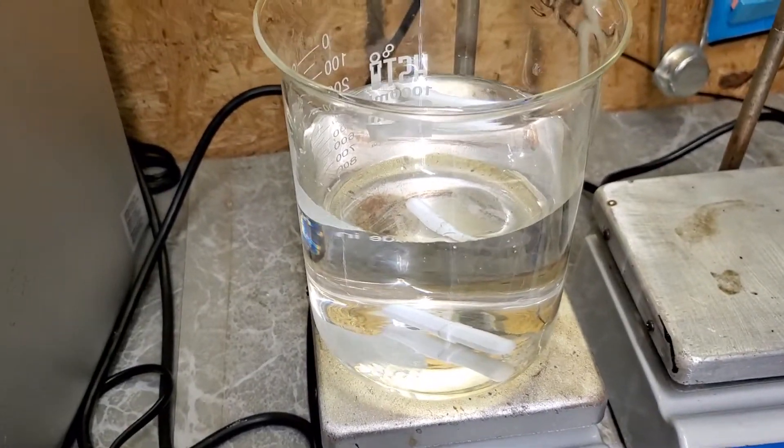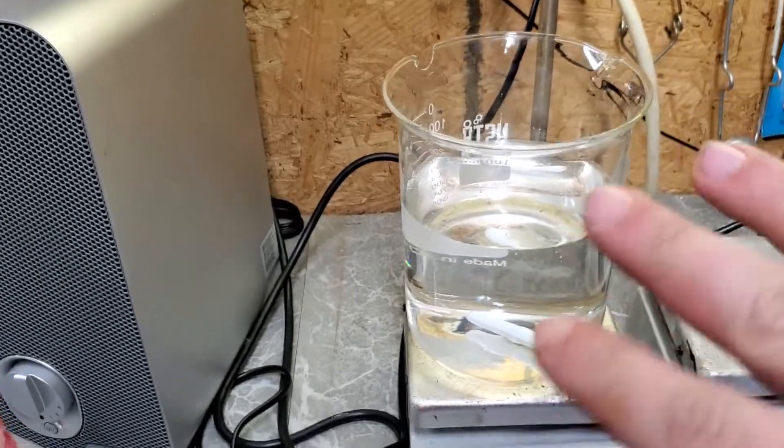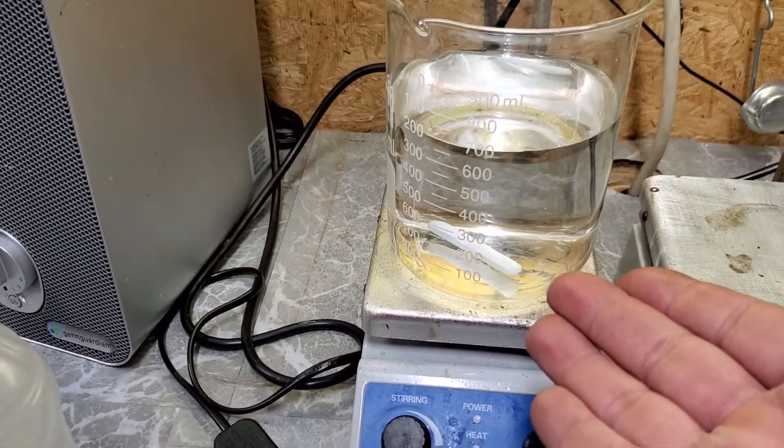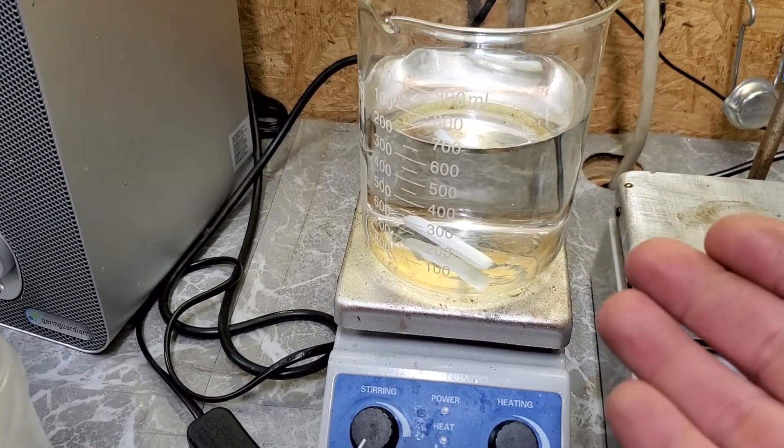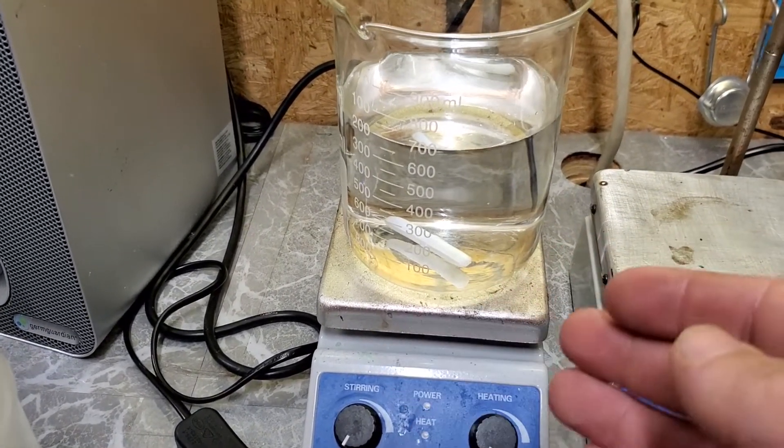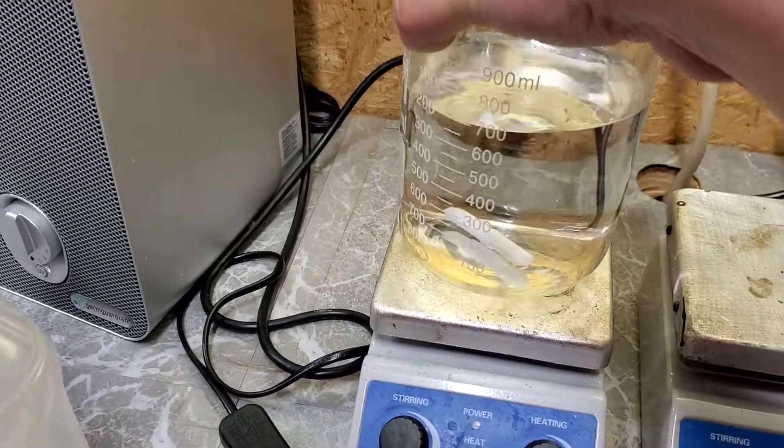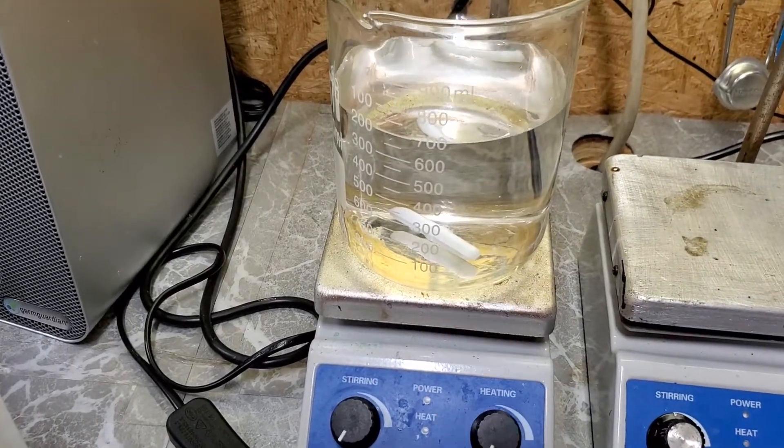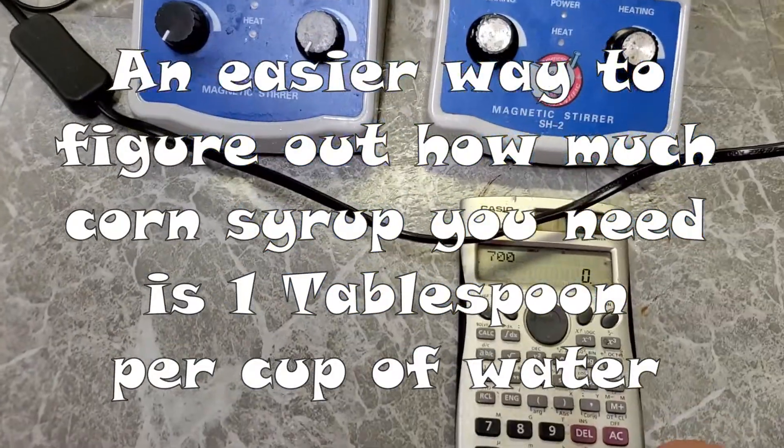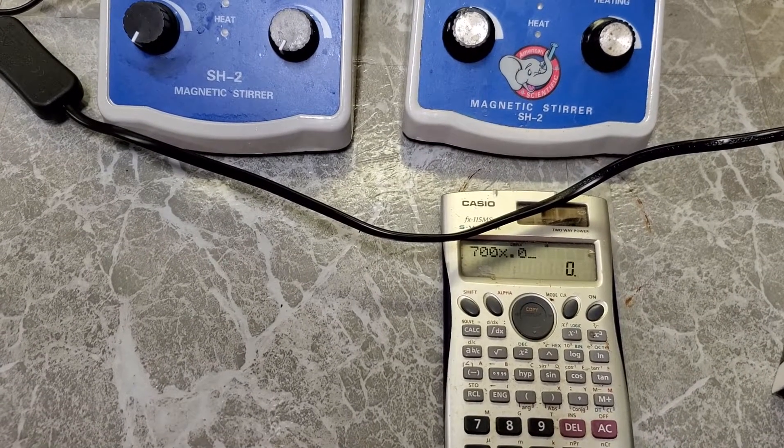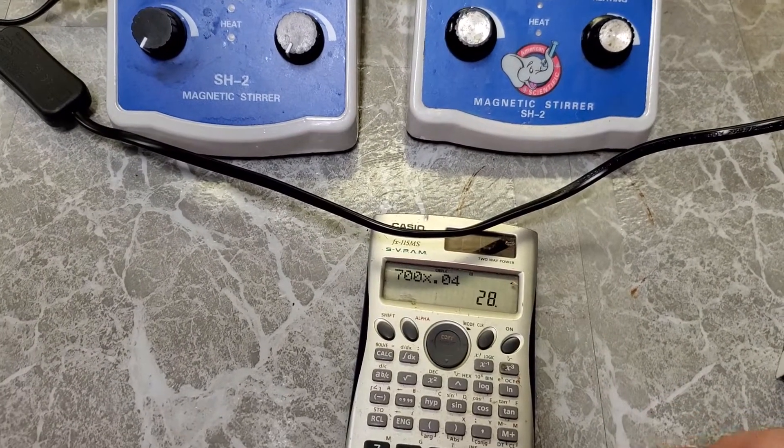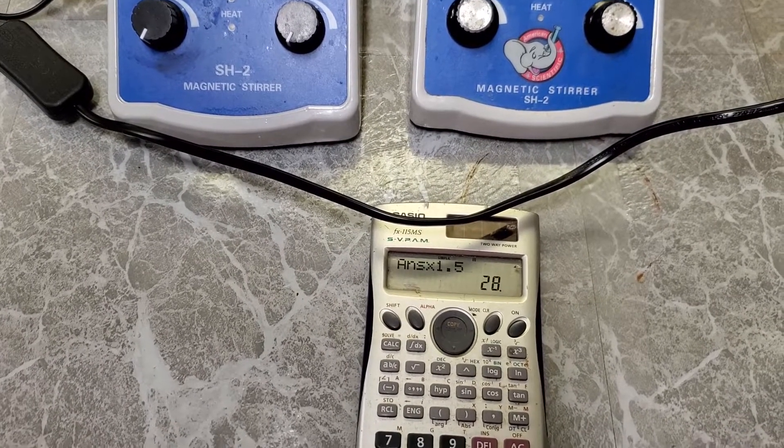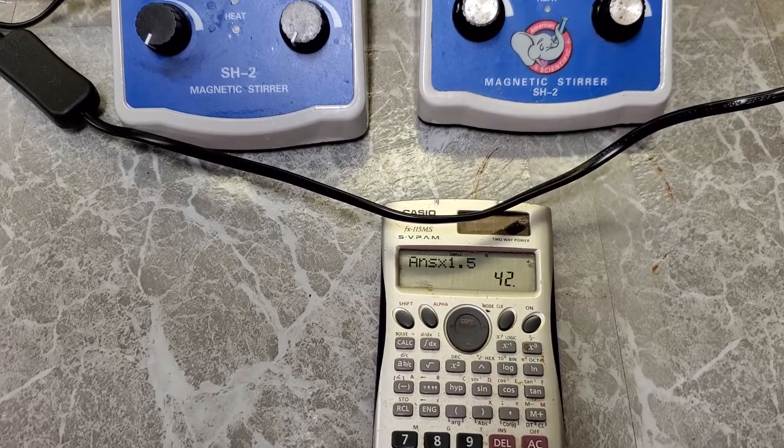You want approximately 4% corn syrup to water by mass. So since we're doing 700 milliliters of water here, 700 milliliters of water will weigh about 700 grams. One cubic centimeter of water is equal to one gram. One cc of water equals one milliliter. So this is approximately 700 grams of water. Let me do some math real quick. So 700 times 0.04, 28. Since corn syrup has a density of about 1.5 grams per milliliter, we need about 42 grams of corn syrup in here.